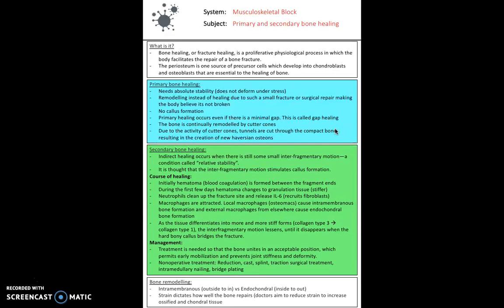Next we can talk about primary and secondary bone healing. In a normal fracture we think about secondary bone healing with intramembranous and endochondral bone formation. But it's important to be aware of primary bone healing as well. Primary bone healing occurs normally where we have remodeling instead of healing due to having such a small fracture or surgical repair. We don't need to form any soft or hard callus here. Primary healing occurs even if there's a minimal gap, called gap healing, and the bone is continually modeled by cutter cones which tunnel through the compact bone and create new haversian osteons.